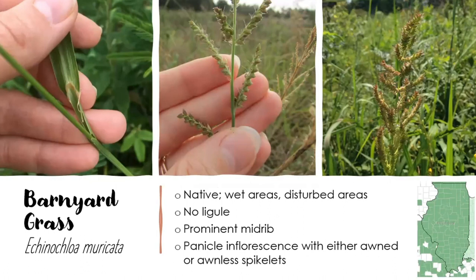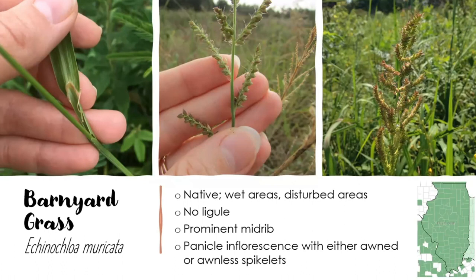Next up is barnyard grass, Echinochloa muricata, a native that can be found in wet or disturbed areas, and I've also seen it planted as a food source for ducks. This is one of those grasses that does not have a ligule — we just have that smooth horseshoe-shaped structure. It does have a prominent midrib on the leaves, and it has a panicle of spikelets directly attached to the branches. There are three different varieties of this species — some are awned and some are awnless. In one photo the spikelets do not have awns, though it might look like they do because of hairs along the rachis. In another photo we can see the spikelets do have awns.